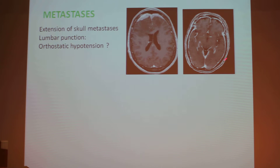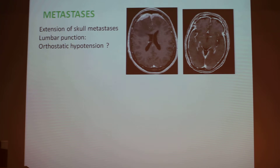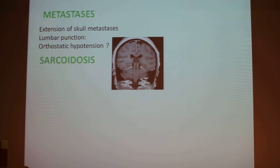Metastasis can go directly to the meningeal layer or can be an extension of skull invasion. Sometimes it is very complicated because when a patient has a cancer with neurological signs and headache, neurologists tend to perform a lumbar puncture to see if there is a leptomeningeal extension. But a lumbar puncture can cause orthostatic hypotension. So if a patient arrives suspected of having leptomeningeal spread, you have to perform the MRI before the lumbar puncture, not after — because it complicates everything.